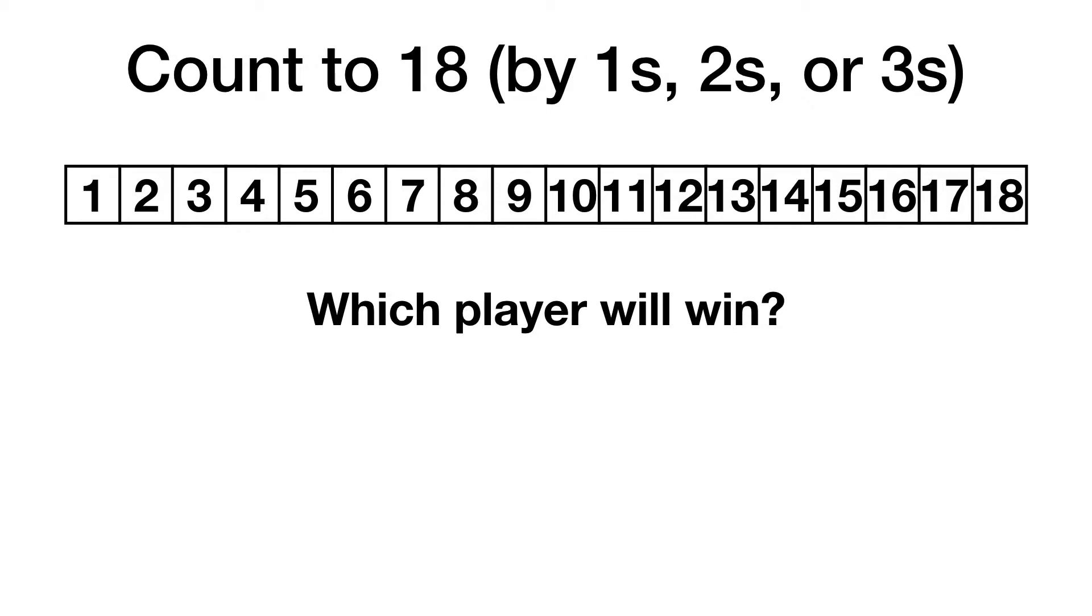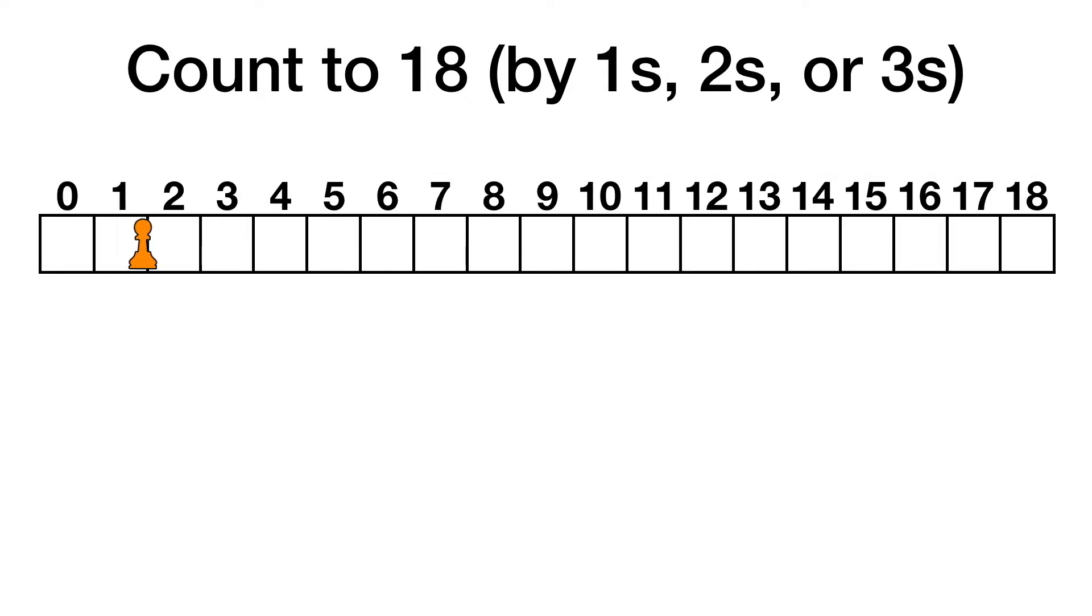Instead of just telling you the answer, I'm going to show you how you can figure it out on your own by analyzing backwards from the end. Backtracking is a useful strategy when it comes to analyzing games. I like to think of it as more of a game board where two players take turns moving a token. The winner is the one who moves the token to the final square.